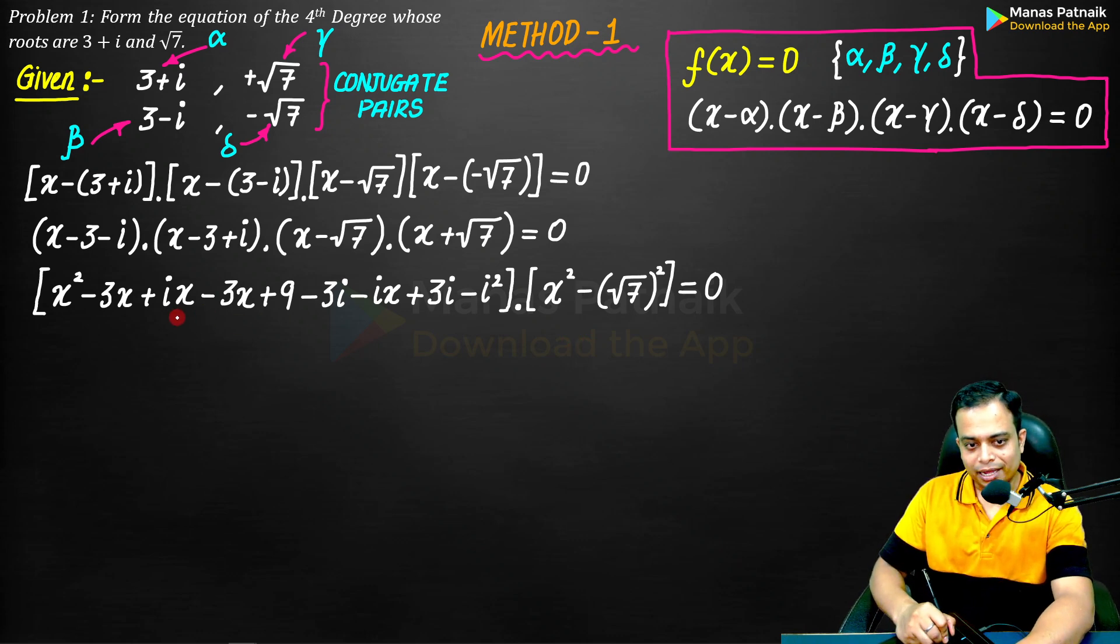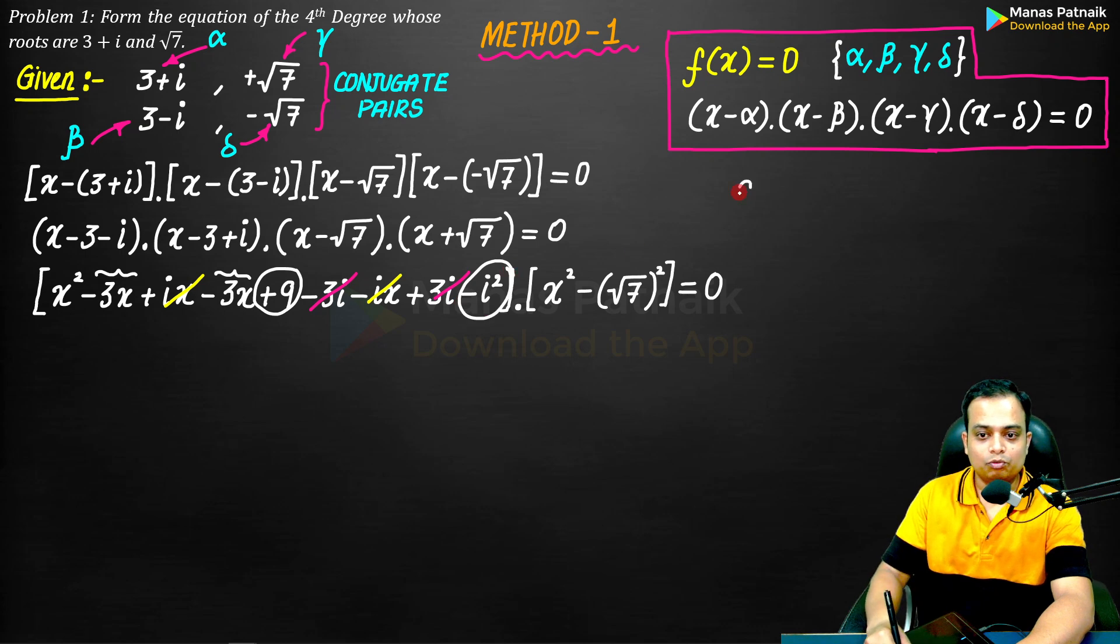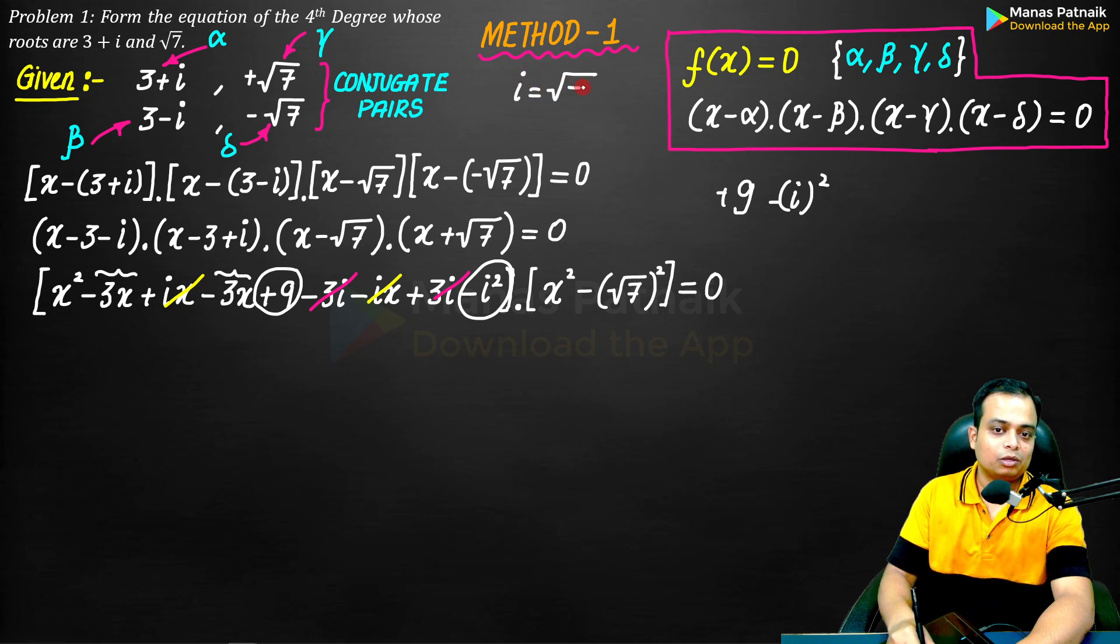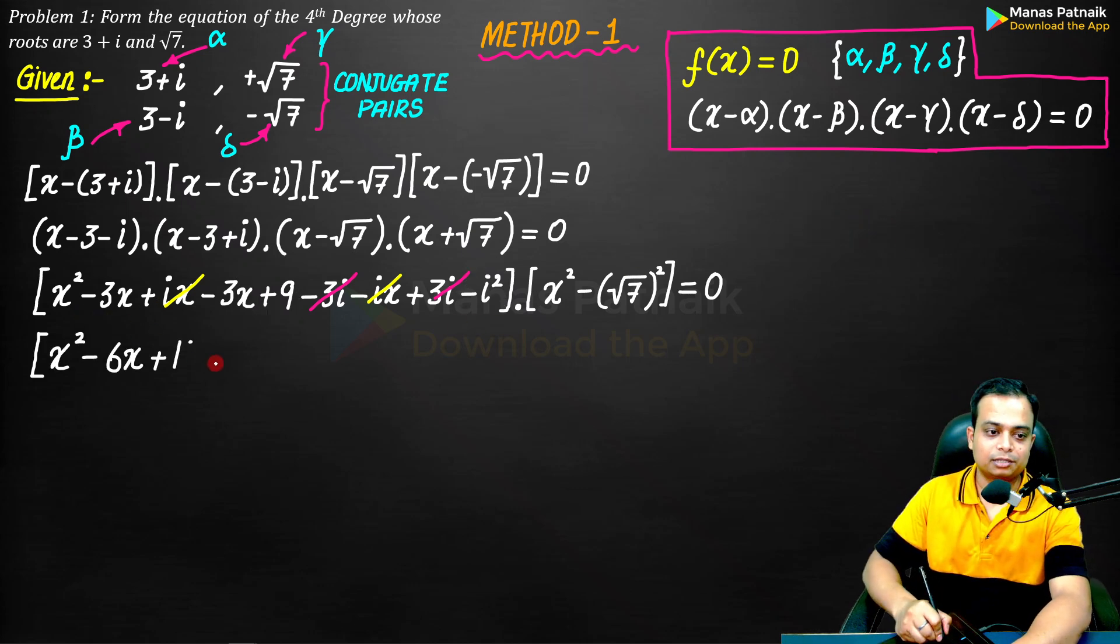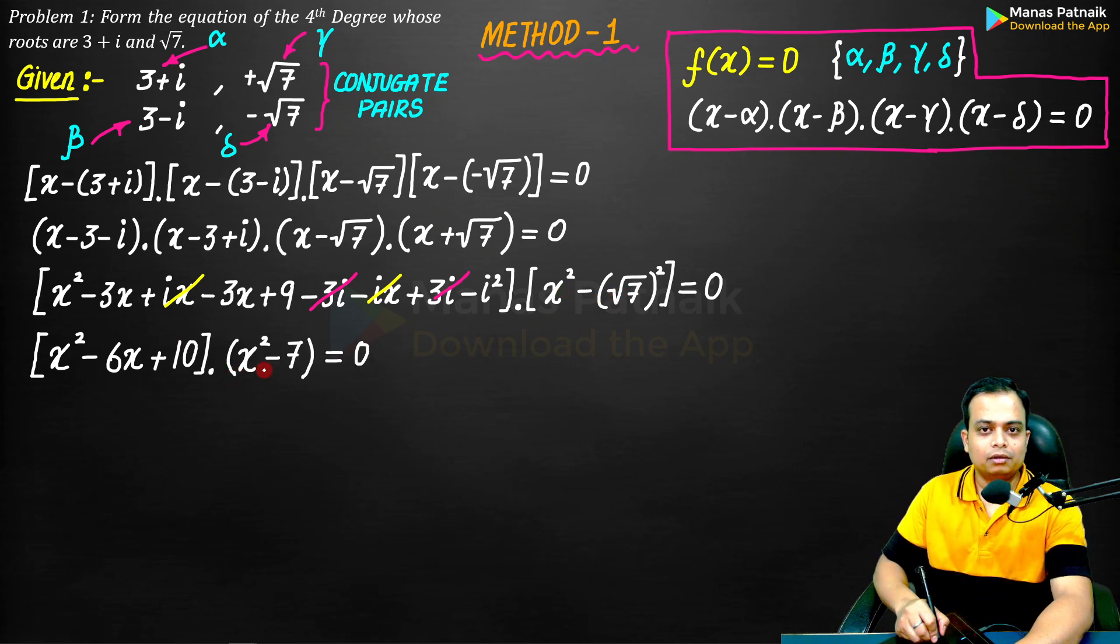Now the things are going to become very simple for you. Iota x and negative iota x cancels. Minus 3 iota and plus 3 iota cancels. What remains is minus 3x minus 3x, which is negative 6x, plus 9, and minus iota square. So you've got plus 9 minus iota square. If you recall, iota square is going to be equal to negative 1, so 9 minus of minus 1 obviously is going to be equal to positive 10.